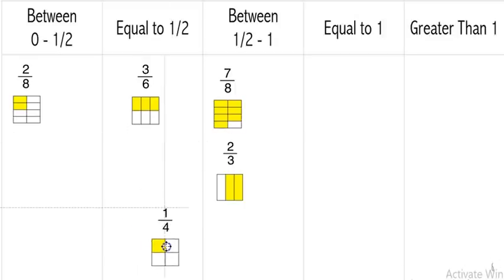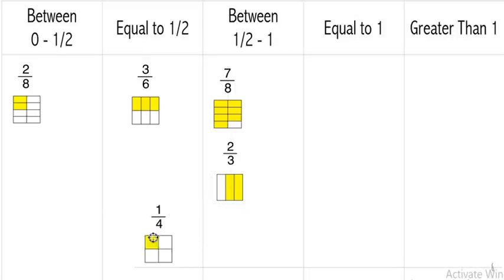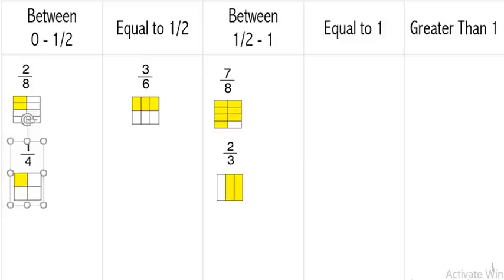The next one is one-fourth. I see three that are not colored and only one that is colored. Half of four is two, and one is even smaller than two. So one-fourth is over here between zero and a half.